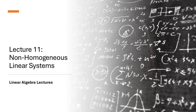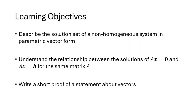Lecture 11: Non-Homogeneous Linear Systems. Our objectives for this lecture are to describe the solution set of a non-homogeneous system in parametric vector form, understand the relationship between the solutions of Ax equals 0 and Ax equals b for the same matrix A, and write a short proof of a statement about vectors.